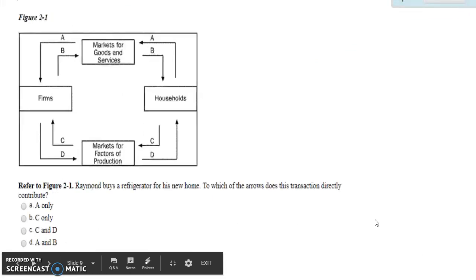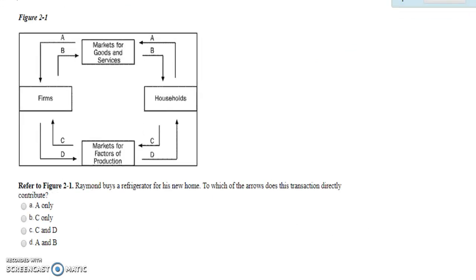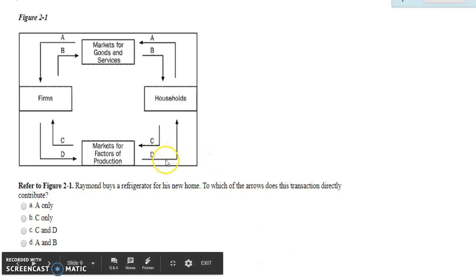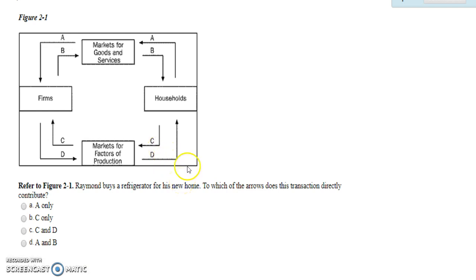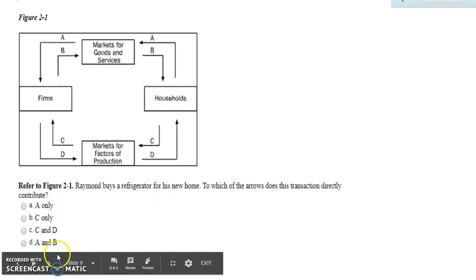Question two: Raymond buys a refrigerator for his new home. To which of the arrows does this transaction directly contribute? The outer circle of the Circular Flow Diagram represents the flow of money. Since Raymond is spending money — not receiving income — D cannot be the answer on its own. He buys a good from the firm, so the firm sold the refrigerator and Raymond bought it. Arrows A and B both apply to this transaction, so the answer is D.